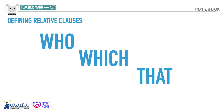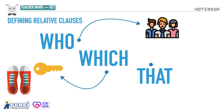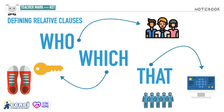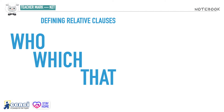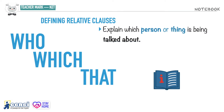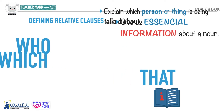These are the basic ones. Who is only used for people. Which is normally used for objects or things. And that is used for things, objects, and also people. So which and that can also be used for both objects. Now, what is a defining relative clause? Practically, they explain which person or thing is being talked about. They tell us essential information about a noun. This is very important, because in the future you will see there are other clauses called non-defining relative clauses, which are a little bit different.